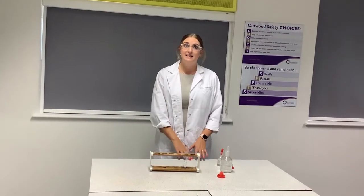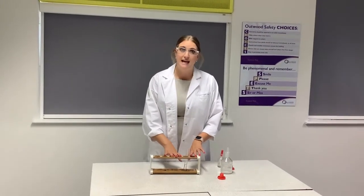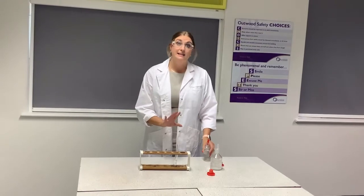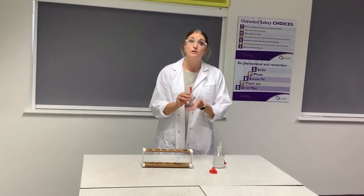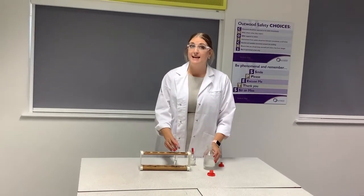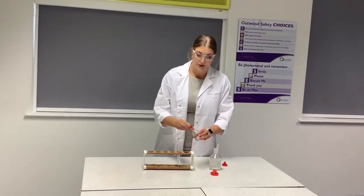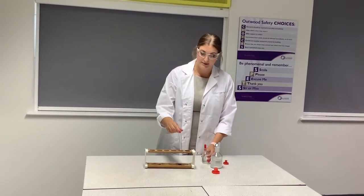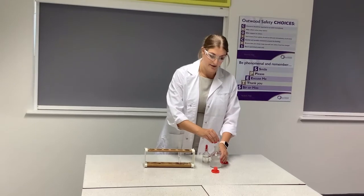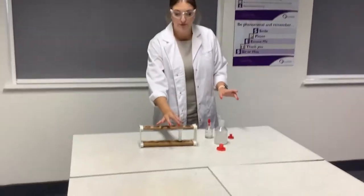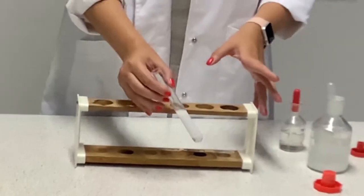Now that we've seen the test for halide ions, there is a different test for sulfate ions, so we're going to need different reactants. Instead of the previous reactions, I'm going to use hydrochloric acid and then add barium chloride. I'll add the hydrochloric acid first to my sulfate ions, give it a small mix, and then when I add my barium chloride solution we should see a precipitate form. It is quite clearly white — so that is the test for sulfate ions.